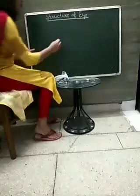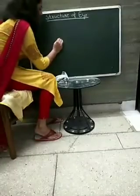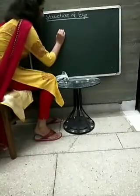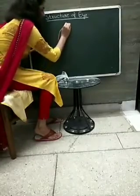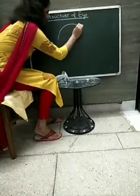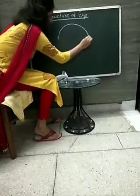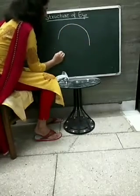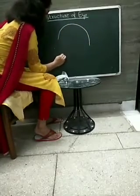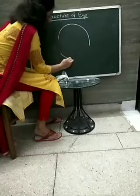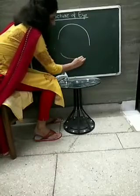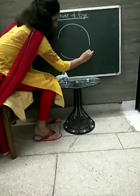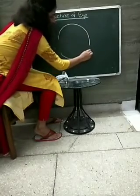First of all, you have to draw a circle like this. You have to draw half circles, or you can say semi-circles like this.